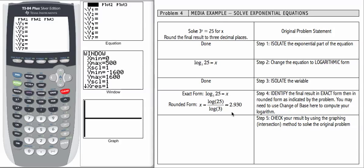We're going to check the result by graphing using the intersection method with the original problem. So let's go to our calculator. For y1, let's put 3 to the x, and for y2, we're going to put 25.